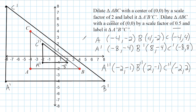After our dilations, here are a few things we should notice. Triangle A prime B prime C prime — the dilation by a scale factor of two — became larger. We stretched it out because the scale factor is greater than one. Anytime the scale factor is greater than one, your shape will be stretched out or expanded. The smaller triangle A double prime B double prime C double prime became a shrunken version because the scale factor of 0.5 is less than one — anytime you see a scale factor less than one, you are shrinking the object.